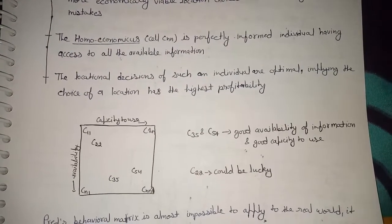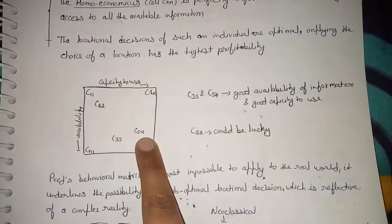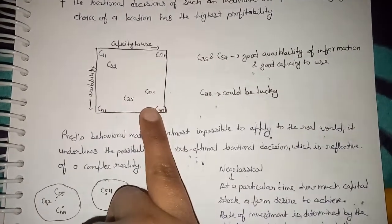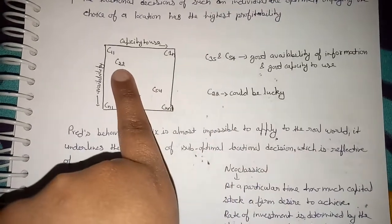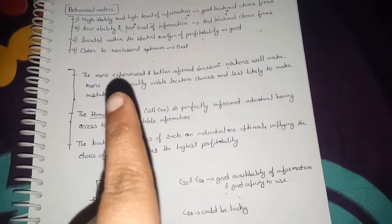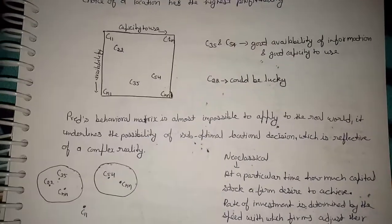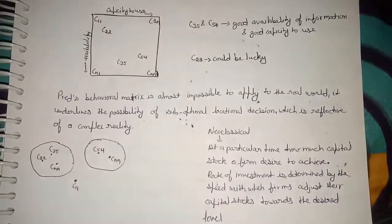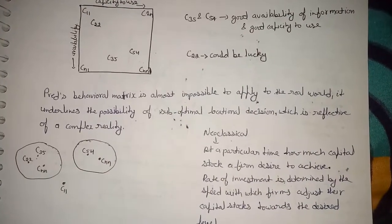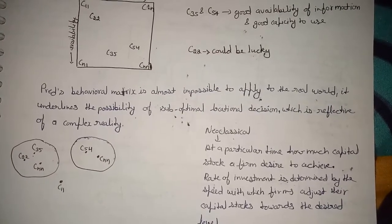The cell CNN implies the choice of location has the highest profitability. Cells like c35 or c54, which have good availability of information and good capacity to use it, can choose a good location. Cell c22 can also be lucky, since it may be located within the special margins of profitability — sometimes with less information but good capability to use it, a good decision can still be made. Pred's behavioral matrix is almost impossible to apply to the real world as it underlines the possibilities of sub-optimal location decisions, which is reflective of a complex reality.